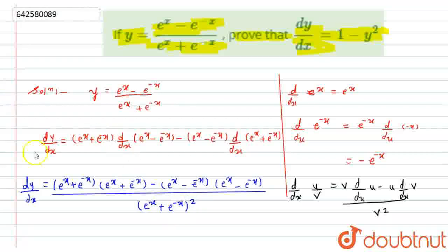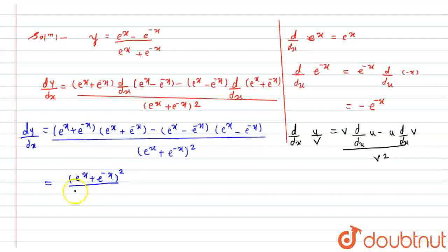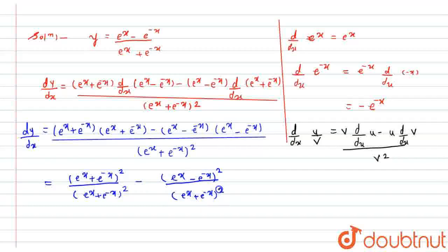We have left the v square above as well: (e raised to x plus e raised to minus x) squared. Now if I further solve this, I can see that e raised to x times e raised to x gives (e raised to x plus e raised to minus x) squared, and separately I will have minus (e raised to x minus e raised to minus x) squared, divided by (e raised to x plus e raised to minus x) squared.